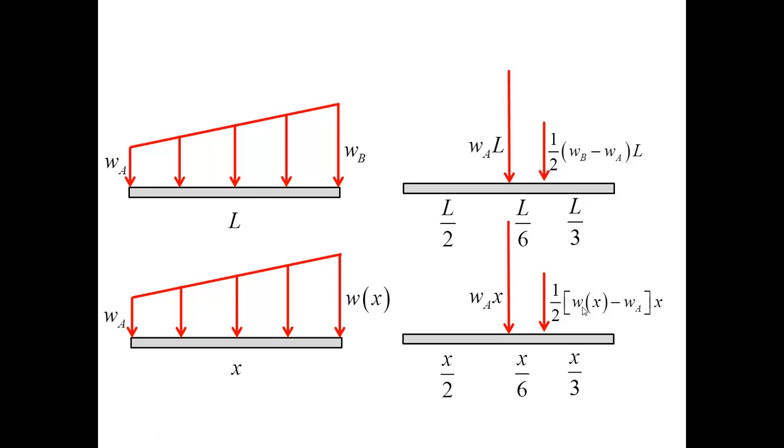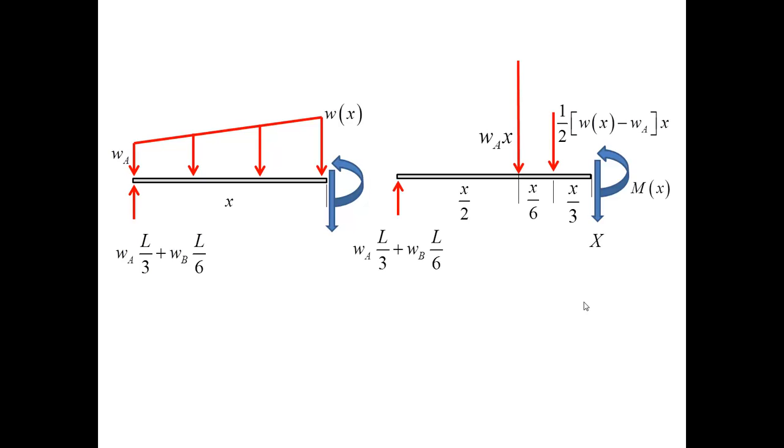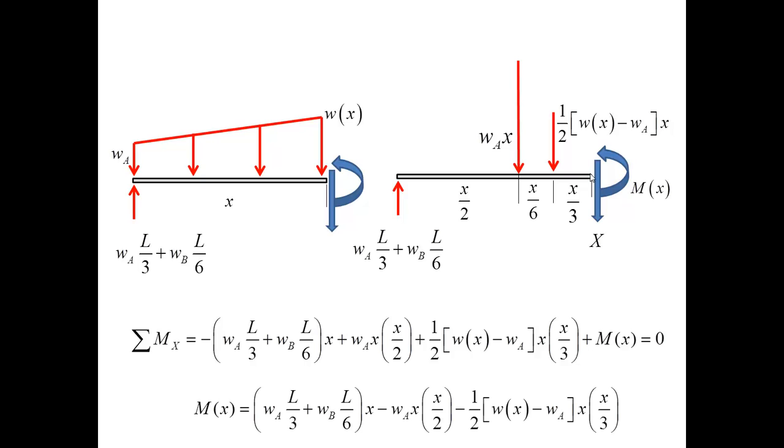Now, with this in mind, I can write down equilibrium equations for this free body diagram using this free body diagram. And I need only moment equilibrium equations. It involves four terms, one, two, three, and four. The moments I evaluated about the point where I made the cut, I denoted by capital X, so that I obtained the expression for M of X.